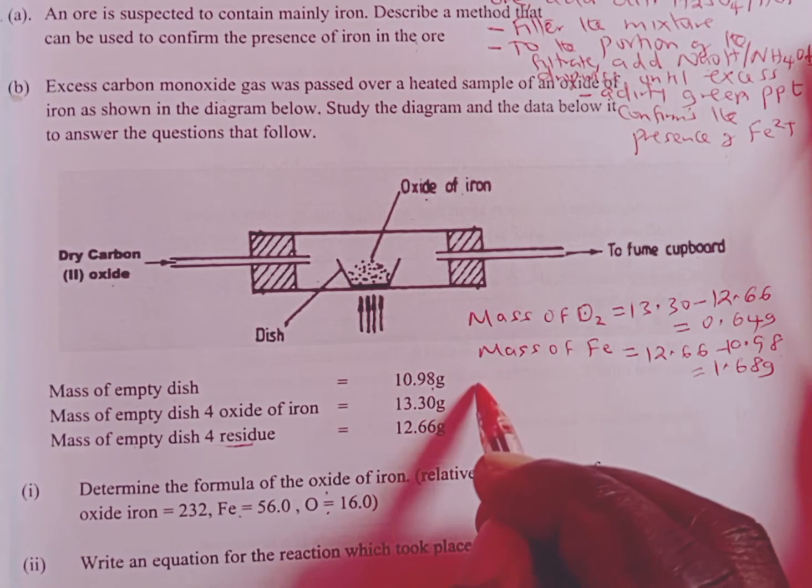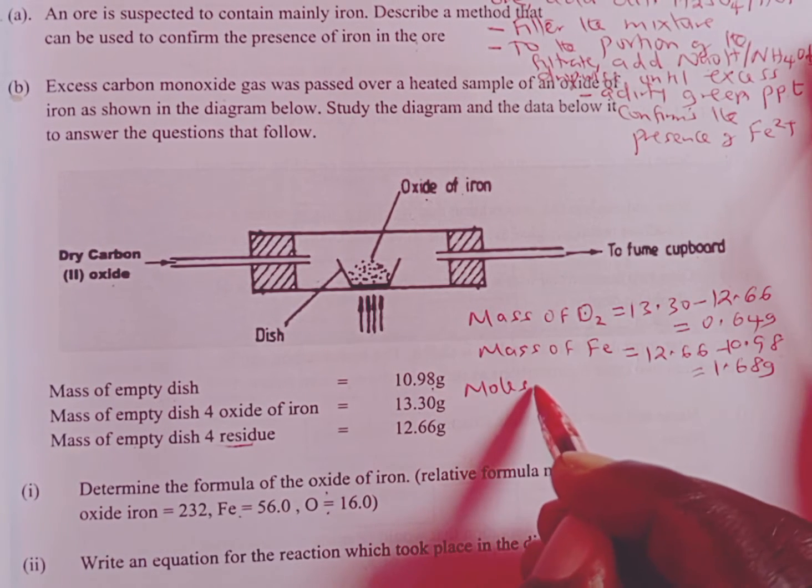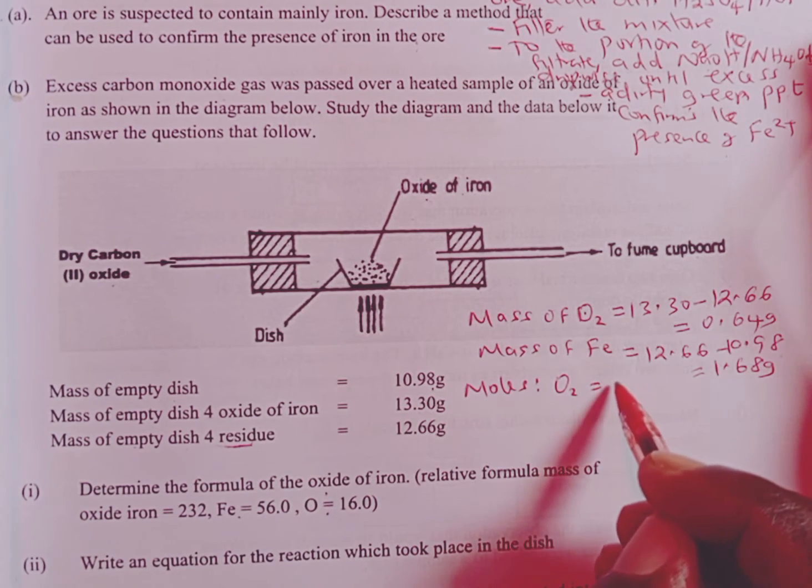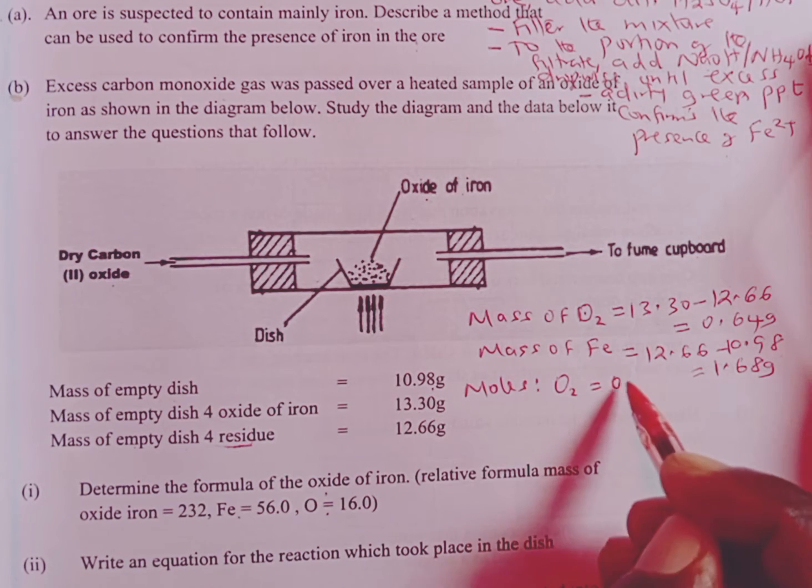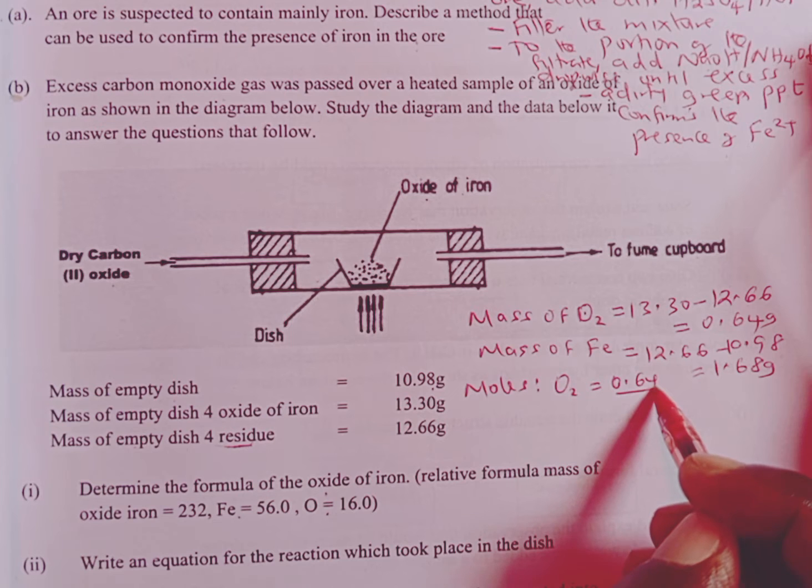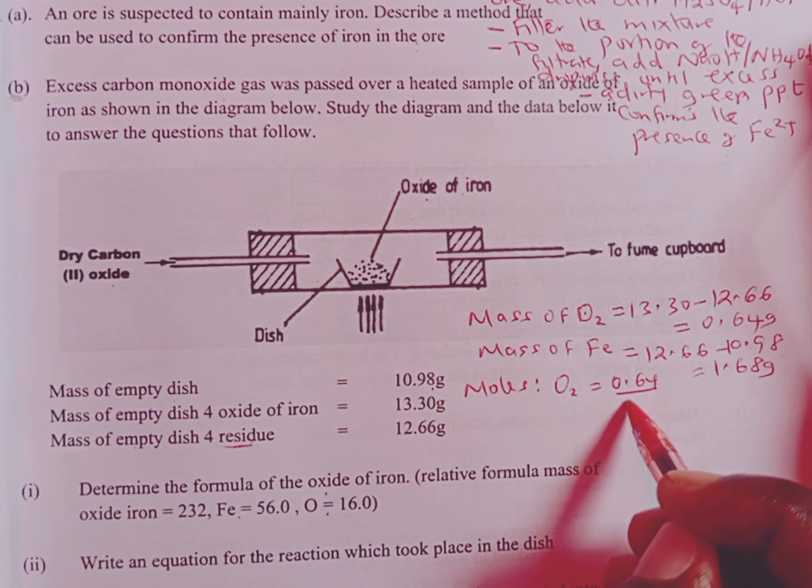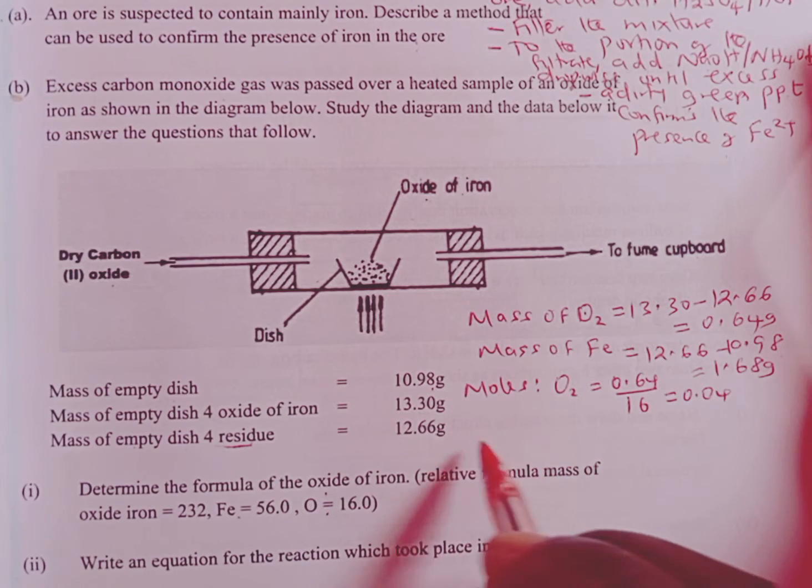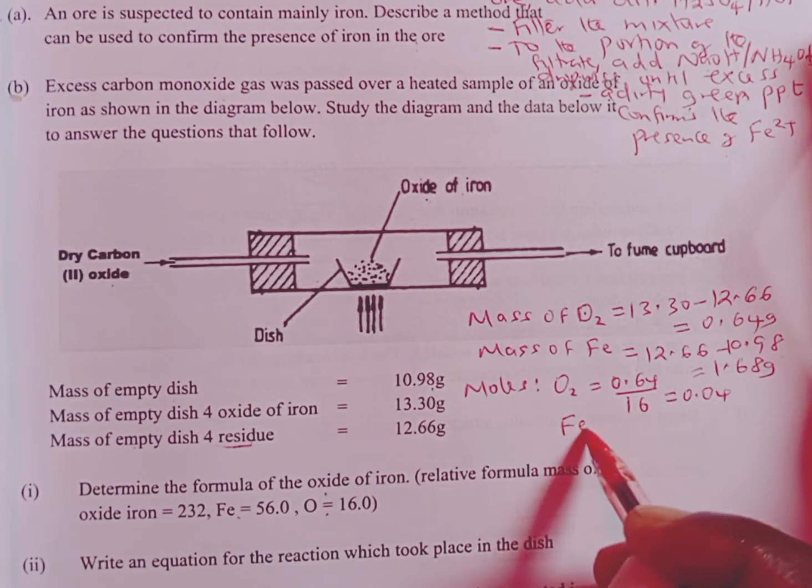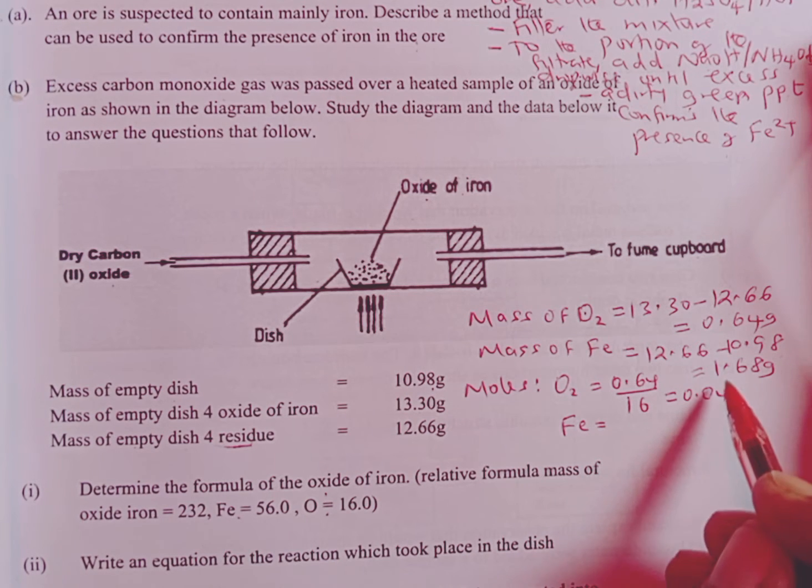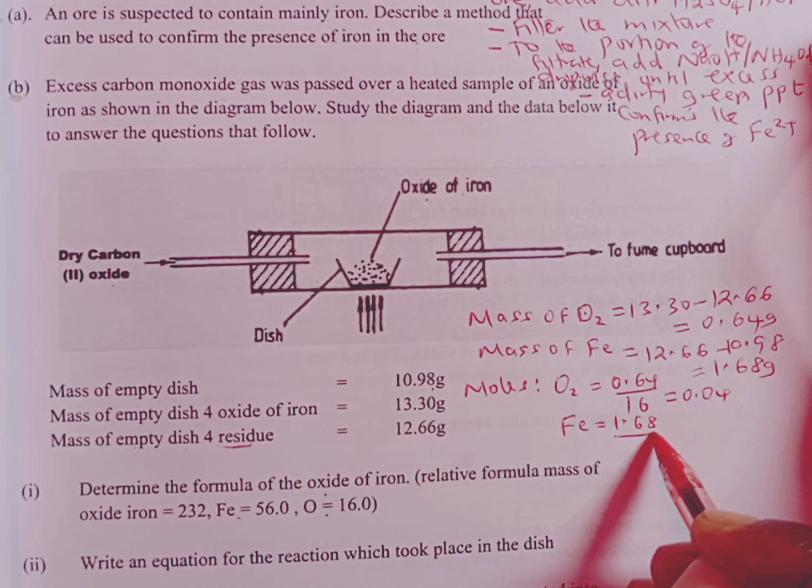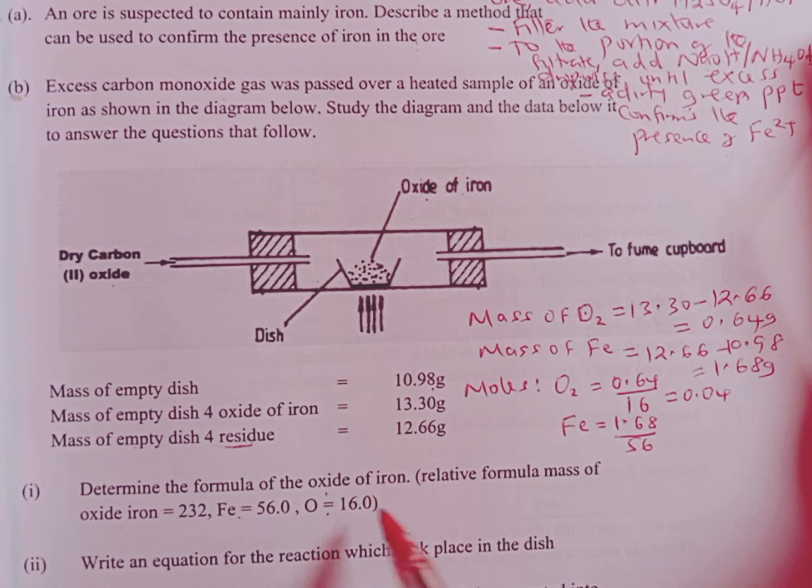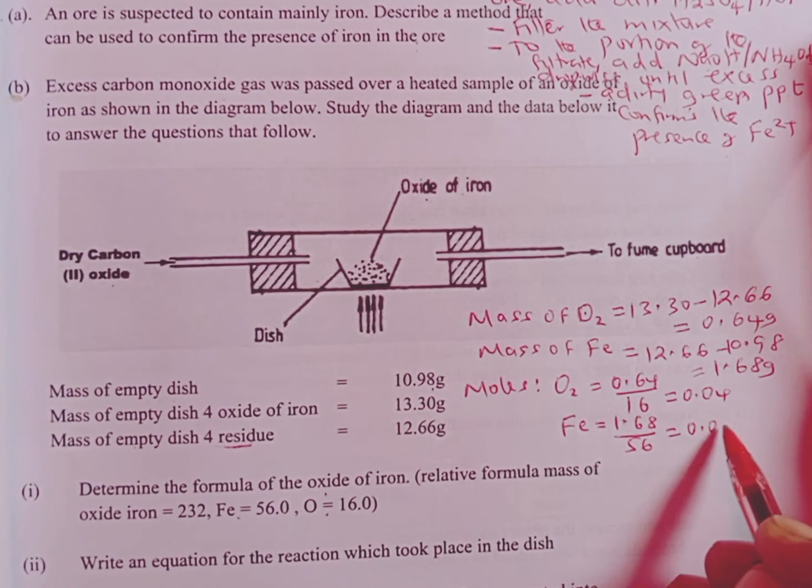So having done that, now we can calculate the moles. We are going to begin by looking at the moles of oxygen. And to get moles, we take the mass which is 0.64 divide by the relative atomic mass of oxygen which is 16, and this gives us 0.04. We also take the moles of iron. To get the moles of iron, we take the mass of iron which is 1.68 divided by the relative atomic mass of iron which is 56. All that information is provided here. This gives us 0.03.